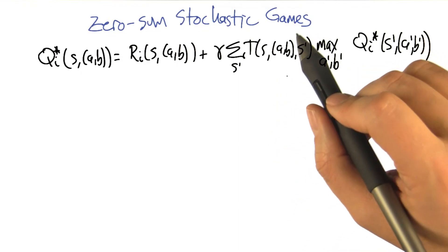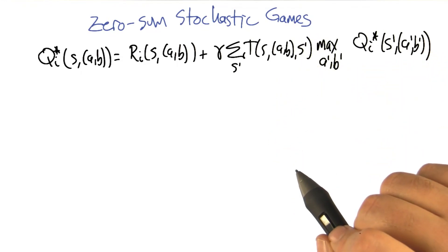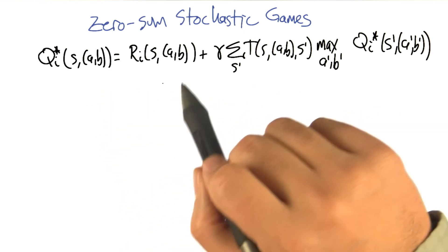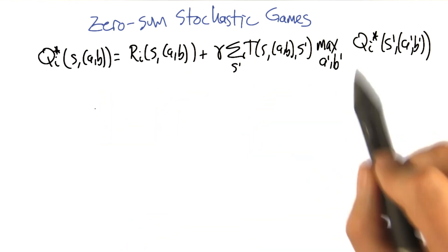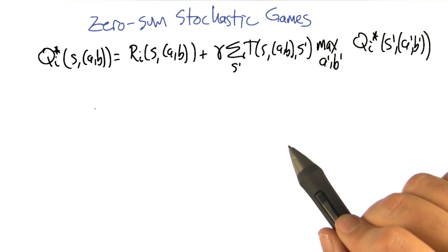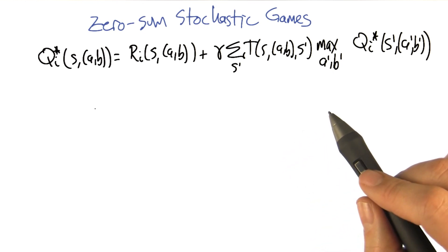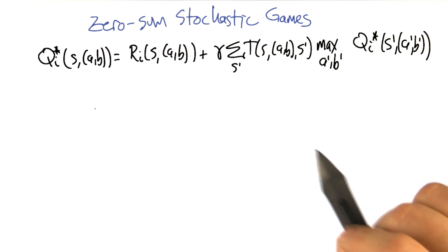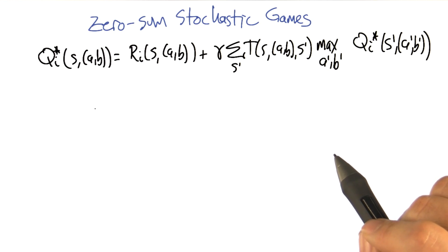Now, what makes stochastic games more interesting, perhaps, than repeated games, is the idea that the actions that the players take impact not just the rewards, but also future states. This is the same issue that comes up when we're talking about Markov decision processes. And the way we dealt with it in that setting was by defining a value function. So it seems pretty reasonable to try to go after that same idea again.